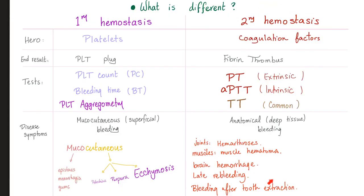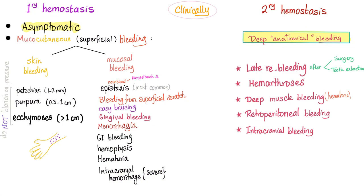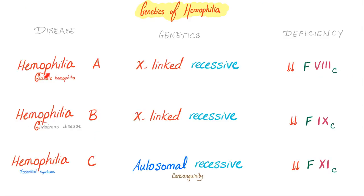Secondary hemostasis is the problem in cases of hemophilia. It's not uncommon for a patient with hemophilia to experience delayed bleeding, hemarthrosis, deep muscle bleeding, retroperitoneal bleeding, intracranial bleeding, etc. Hemophilia A is X-linked recessive, problem with factor 8. Hemophilia B is X-linked recessive, problem with factor 9. Hemophilia C is autosomal recessive, problem with factor 11.